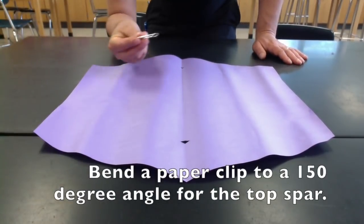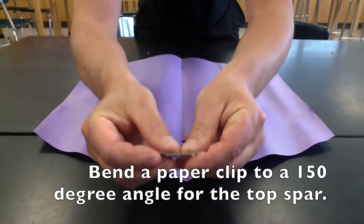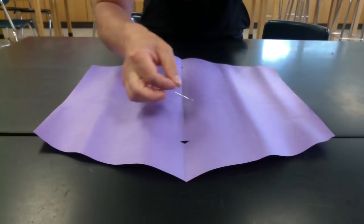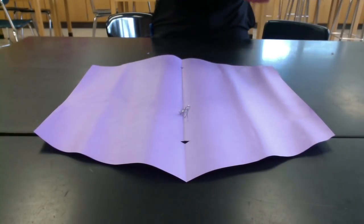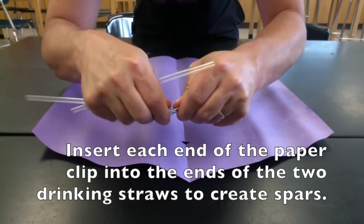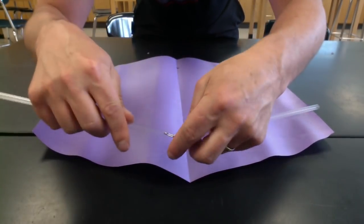Next, bend a paper clip to a 150 degree angle to create the top spar. Insert each end of the paper clip into the ends of the two drinking straws. This will create a spar.